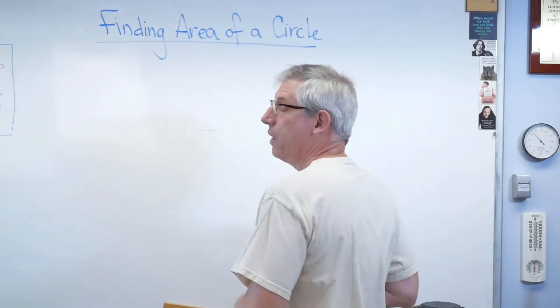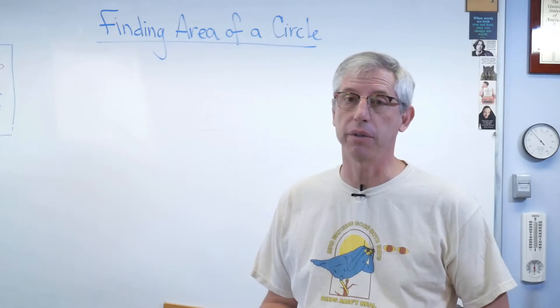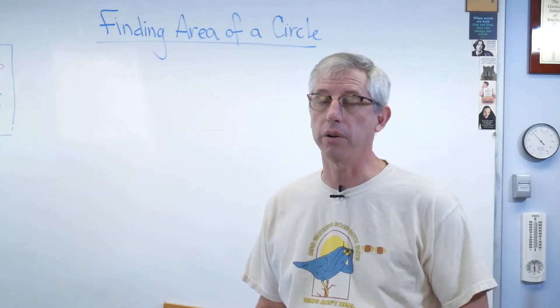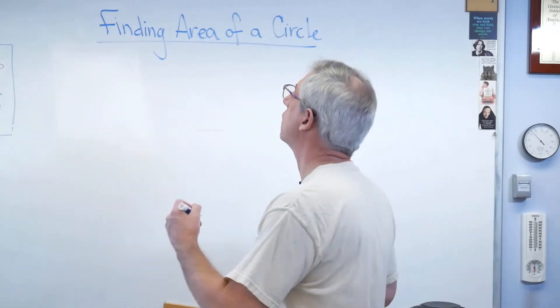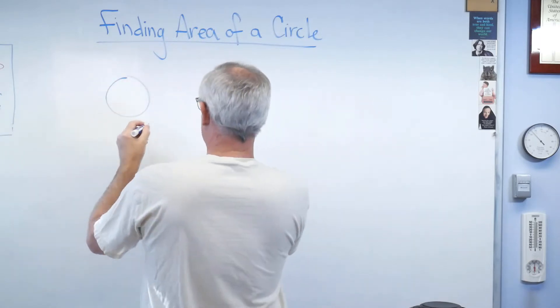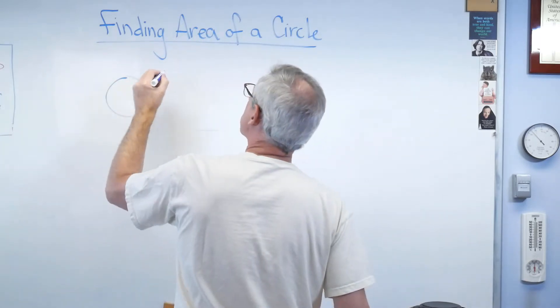Now, we pretty much all know the area of a circle is pi r squared, right? Or pi over 4 d squared, whichever you prefer. So we learned this, I don't know, maybe junior high school or something.